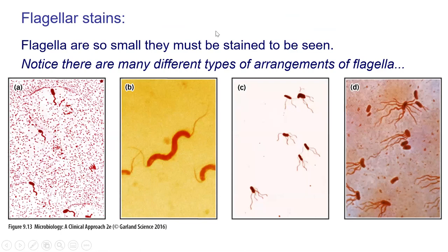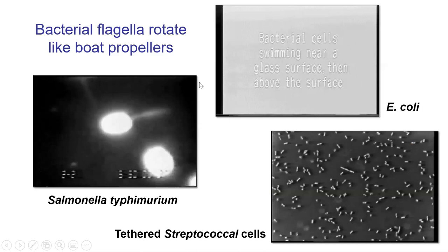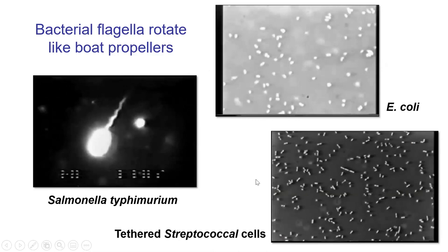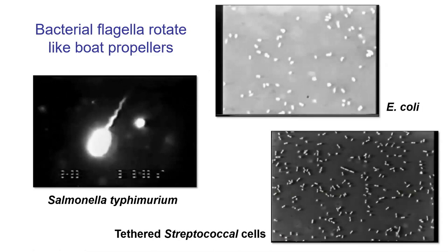There are different varieties and arrangements of flagella. Some organisms have one, some have many, and some have none. They're very, very tiny, skinny structures — usually you need special thick stains to make them visible. Here are some videos: the first shows fluorescence microscopy where you can actually see the flagella moving and twisting around; the second shows E. coli swimming; and the bottom one shows tethered organisms attached to a slide, causing the whole organism to spin around.